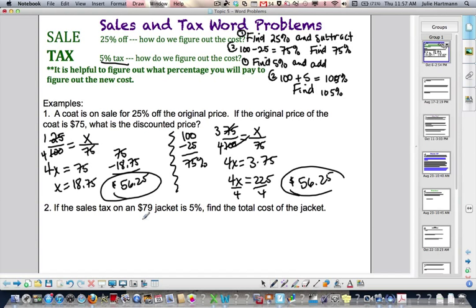Okay? Number 2, sales tax on a $79 jacket is 5%. Find the total cost of the jacket. What am I going to pay? I'm going to pay 100 plus my 5%, or 105%. So, I'm just going to figure that out. 105 over 100, and this is of a $79 jacket. Looks like that. Cross multiply.